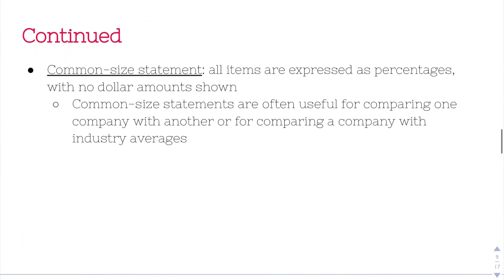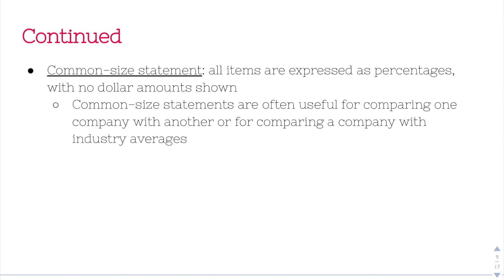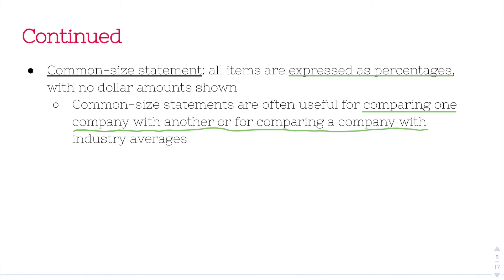A common size statement usually comes up in multiple choice, so just know what it is. A common size statement is a statement in which all items are expressed as percentages — there are no dollar amounts. This makes it really useful for comparing one company with another, or comparing a company with industry averages, because dollar amounts depend on the size of the company. Percentages make fairer comparisons. So a common size statement is simply a statement with all percentages, useful for comparisons.